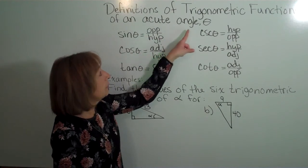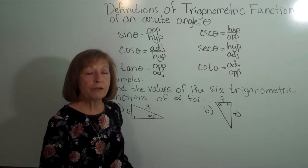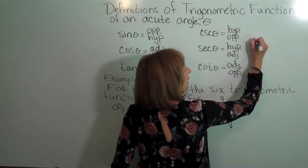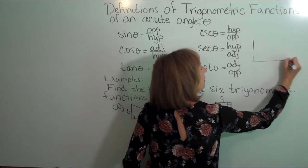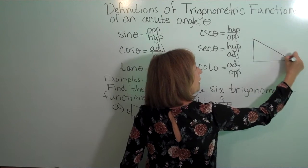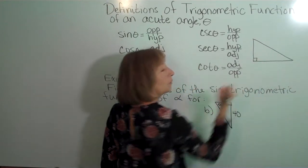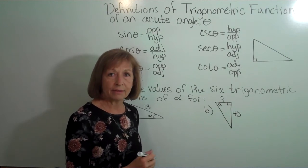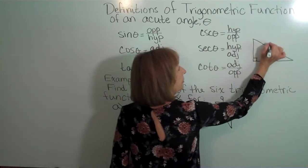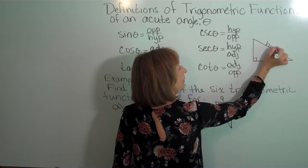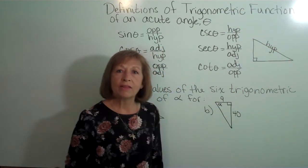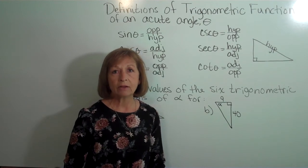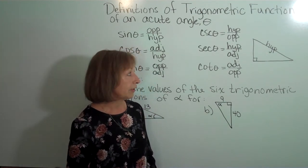Definitions of trigonometric functions of an acute angle theta: if you have a right triangle, notice where the right angle is. Remember always that the side opposite the right angle is the hypotenuse. And then the other two sides of a right triangle, the ones that make up the right angle, are called the legs of the triangle.